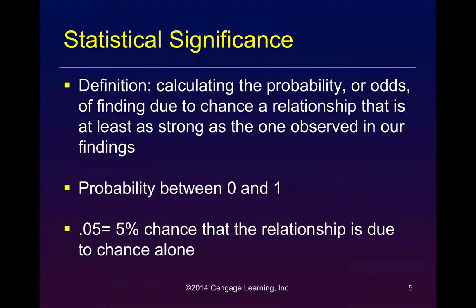When we say in the report of our findings that our intervention was successful and it was statistically significant at the .05 level, what we are saying is that there is a 5% chance that we are wrong. Now, if you were a betting person and you knew that 95 times out of 100 you would win your bet, you would bet. That 95 times out of 100 would be the probability. And 95 divided by 100 gives you .95, which is between 0 and 1.